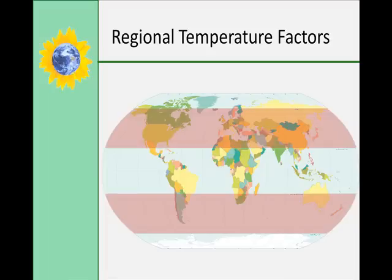Distance from large bodies of water means that you lose the moderating effect that water has on temperature. Winds off the ocean will prevent extremes in temperature — hot and cold — in coastal regions, compared to inland areas of the same latitude and elevation. For example, Seattle has warmer winters and cooler summers, versus Minneapolis, which has colder winters and hotter summers.